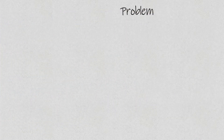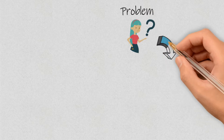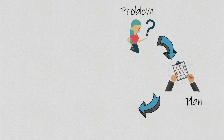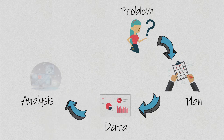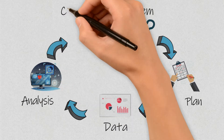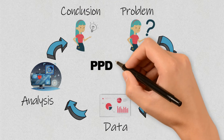The statistical investigation circle consists of: Problem, Plan, Data, Analysis, Conclusion, and finally, Communication.